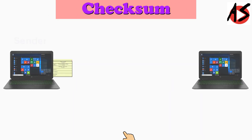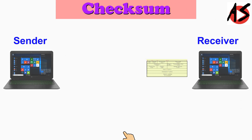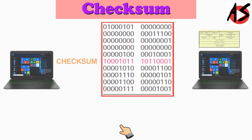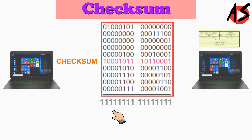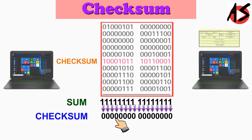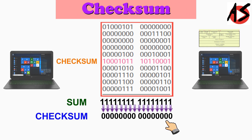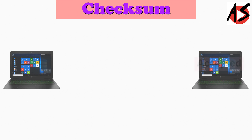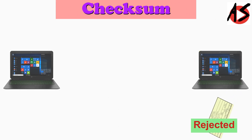Now this IP packet is transmitted to the receiver via the network. The header is divided into 16-bit sections again. All the sections are added and the sum is complemented — all 0s change to 1s and all 1s to 0s. Since the result is 16 zeros, the packet is accepted; otherwise the packet is rejected.